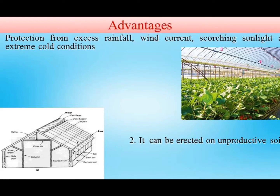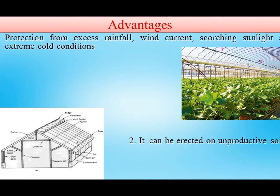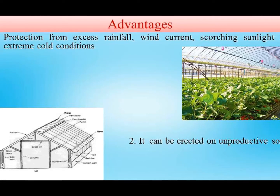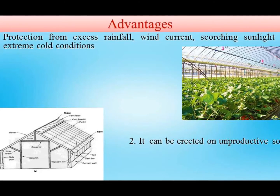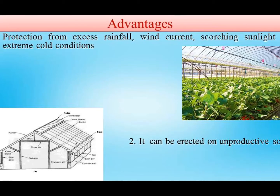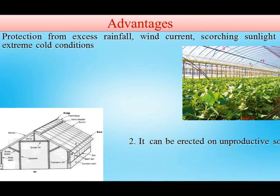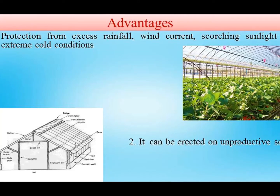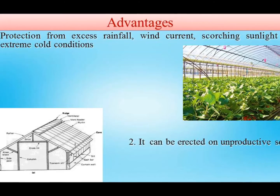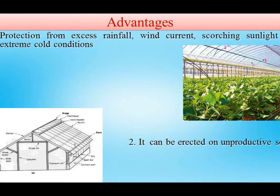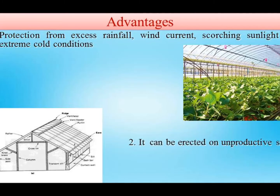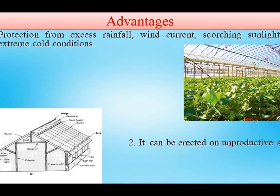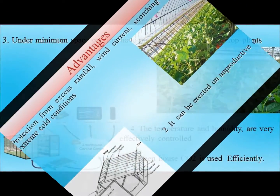Next, greenhouse is possible to erect on unproductive soil. Unproductive soil is not suitable for commercial cultivation of crops. The majority of land in India is unproductive, like wasteland, barren land, or undulating land. Such type of land can be brought under Poly House and help to sustain production and productivity of that particular region.